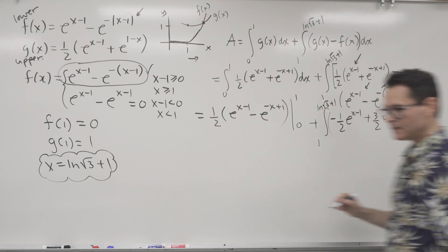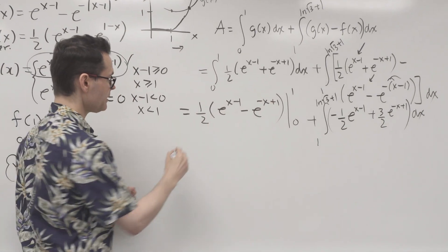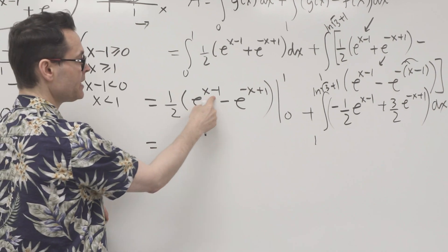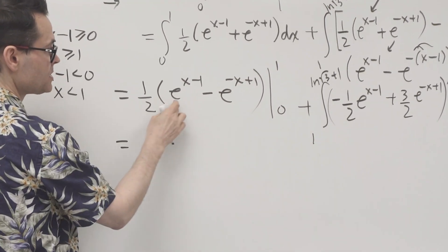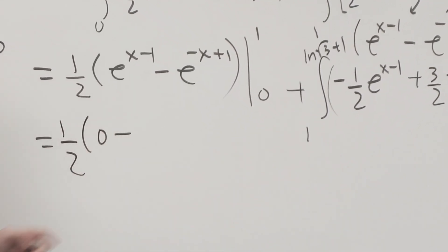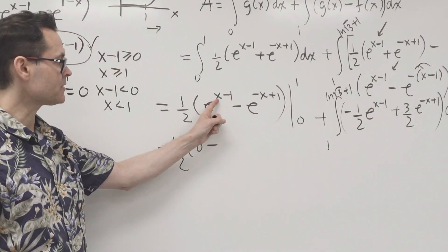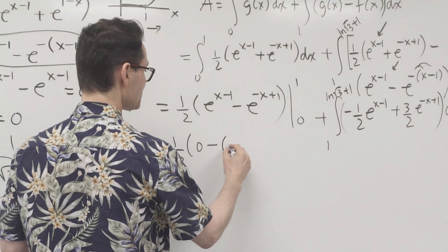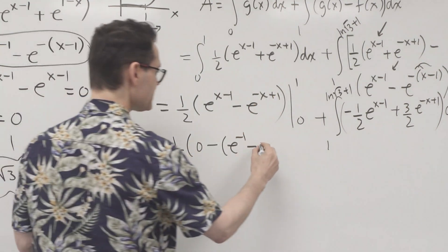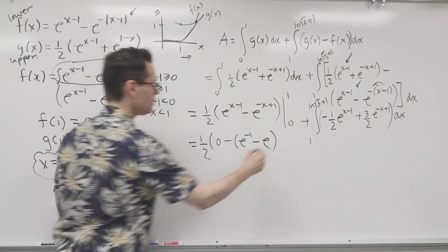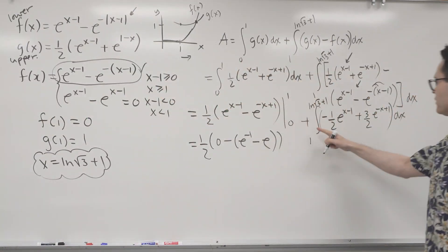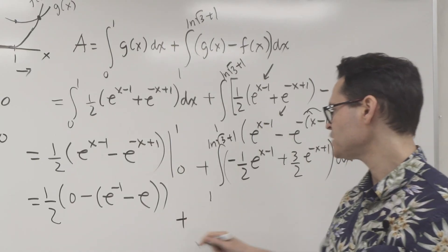Let me evaluate the first part. Plugging in x = 1: 1 − 1 = 0, and 1 − 1 = 0, so that's 0 minus. Now plugging in x = 0: that's e^(0−1) = e^(−1), minus e^(0+1) = e. Close bracket. That turned out not too bad.